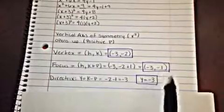The vertex is at the interval hk. Here, our h is negative 3, negative 2. Our focus is at the equation h, k plus p, which gives us negative 3, negative 1.